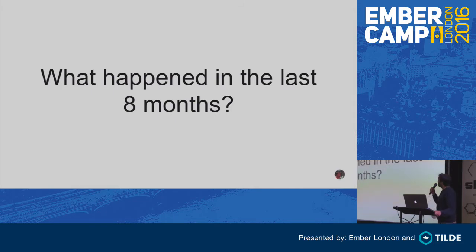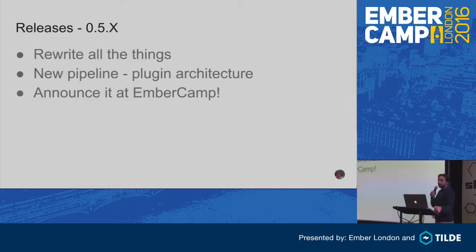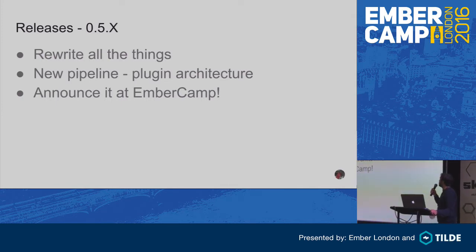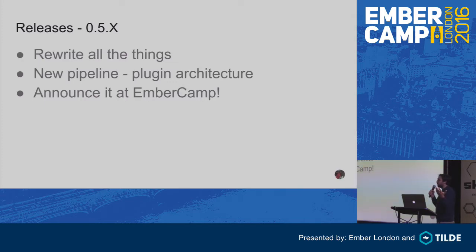So what happened since then? We did a few things. That day we released 0.5 — that was a complete rewrite. And we moved to what we call the pipeline architecture. The idea is that each deploy is a series of steps, and we can enable you to install different plugins. Each plugin can implement one or many steps, and the combination of the plugins and the pipeline running will produce your deploy.